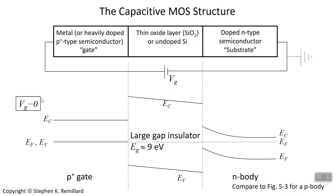This diagram is for zero gate voltage. There's an adjustable battery attached across the structure — a terminal on the metal (the P-type degenerate gate) and a terminal on the n-type semiconductor — and it's set to zero. Setting it to zero is the same as a short circuit all the way across. Without any applied voltage, we're in thermal equilibrium, so the Fermi energy must be horizontal and continuous all the way across.